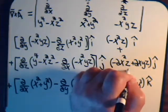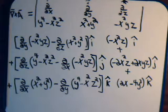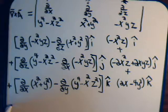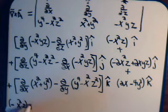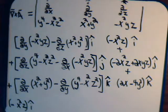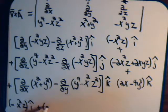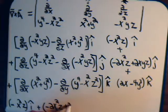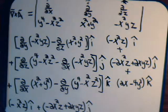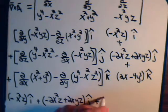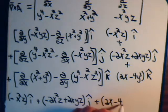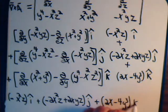Combining all three components, that is the curl of a — del cross a. Writing it out: the i component is −x²z, the j component is (−2x²z + 2xyz), and the k component is (2x − 4y³).